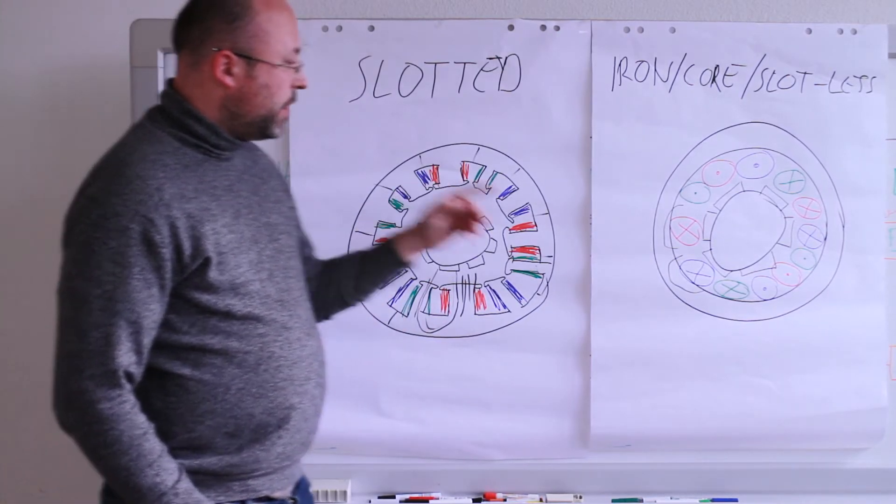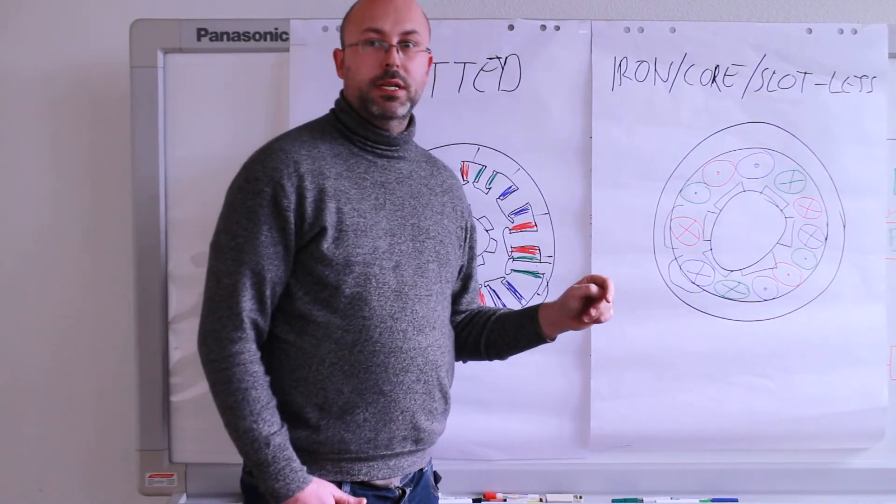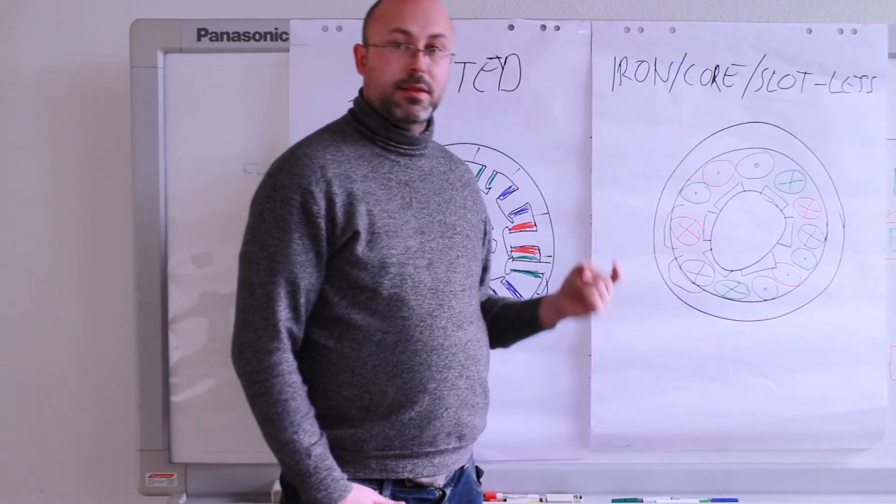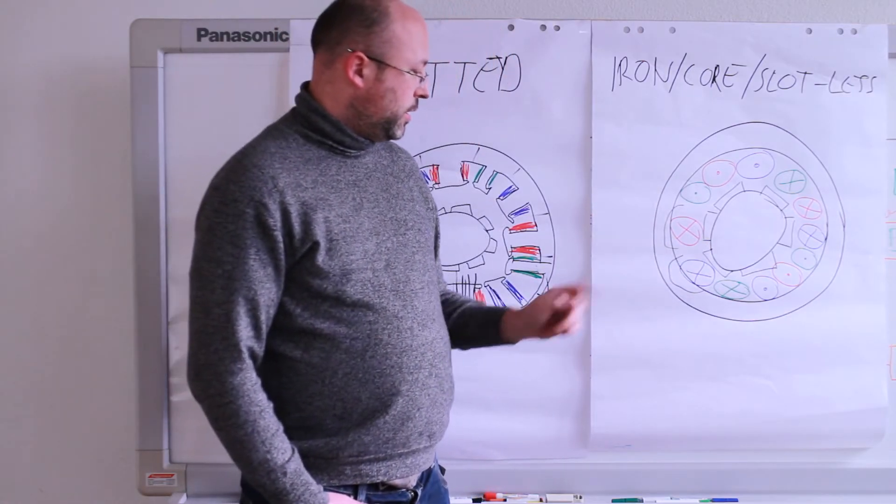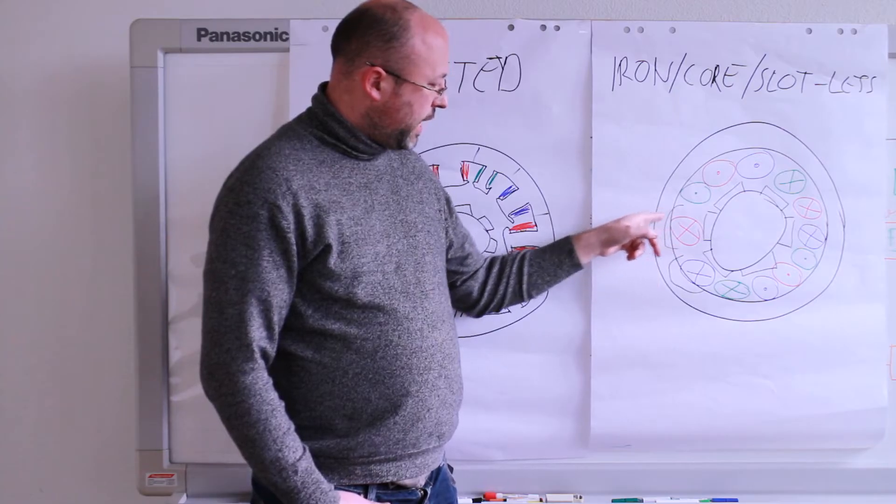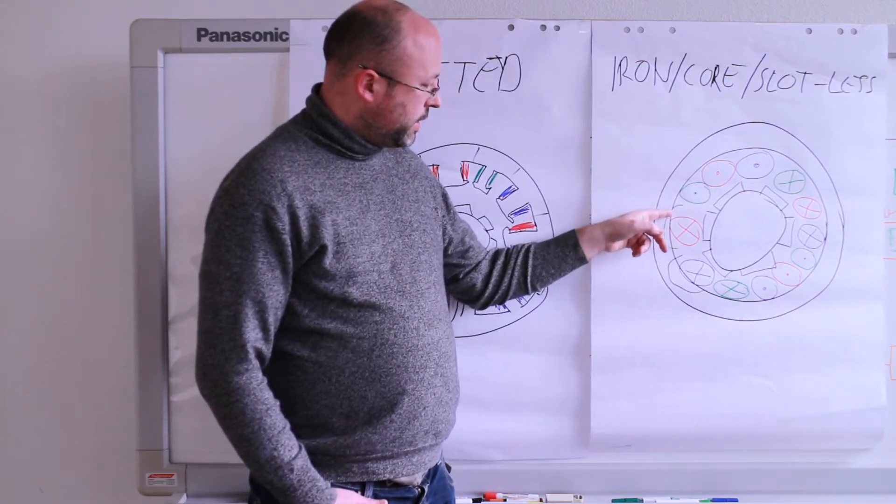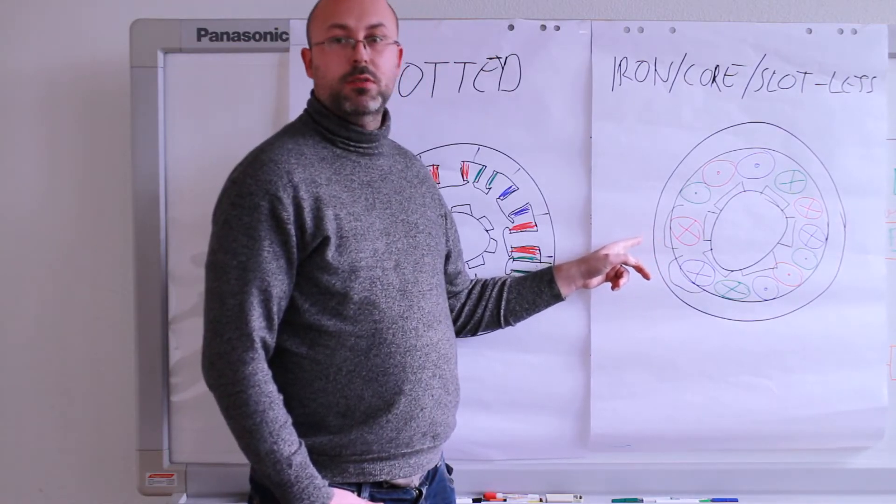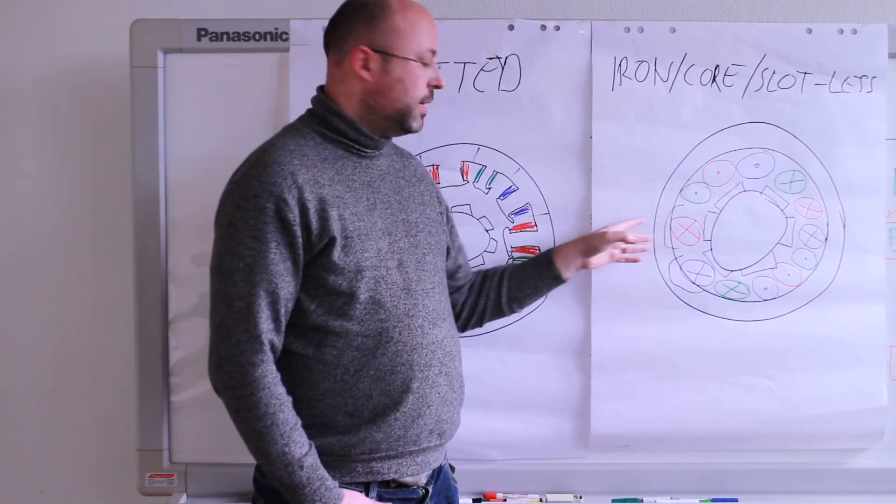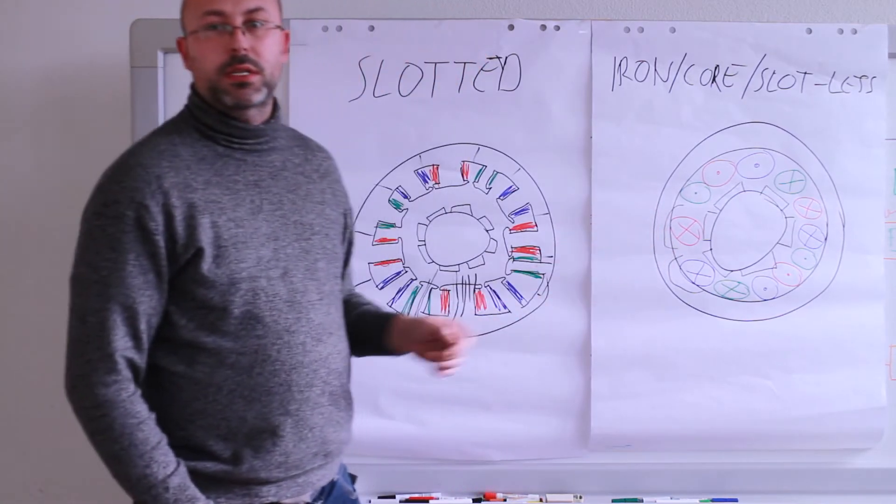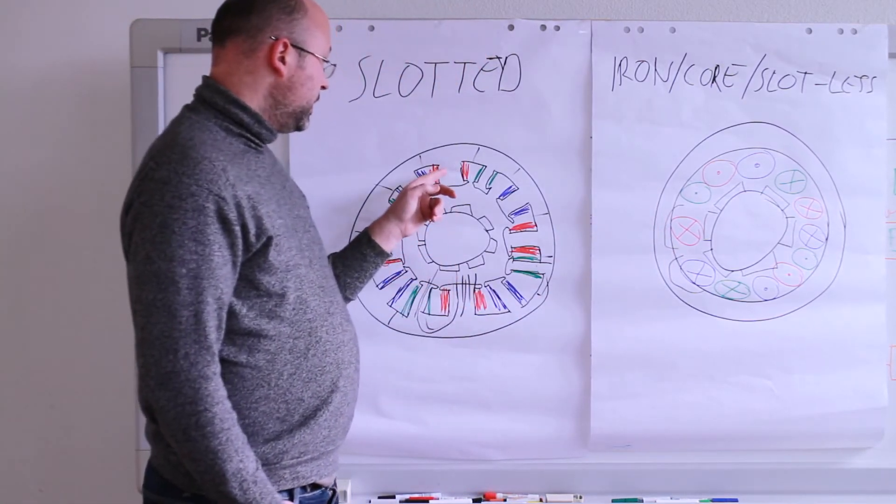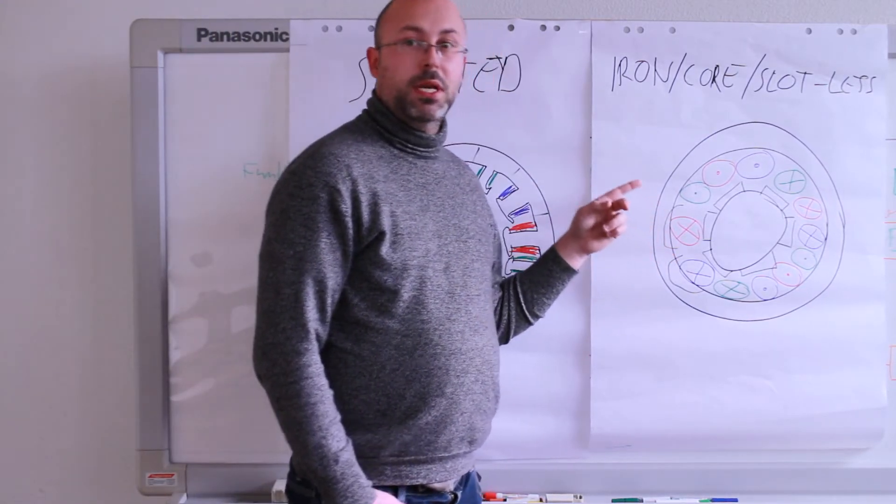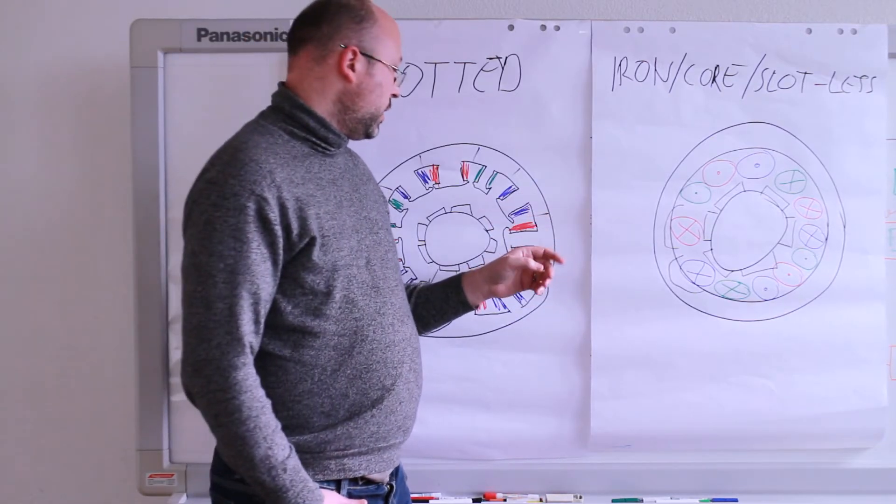What is a clear advantage of the slotless motor is that, at least in the teeth, we don't get saturated iron. The only place where we could get into saturation is the iron ring outside. But this one is quite easy to increase and it's much easier to simulate with finite element tools than a whole tooth like this. Another advantage is we have no cogging torque, absolutely no cogging torque.